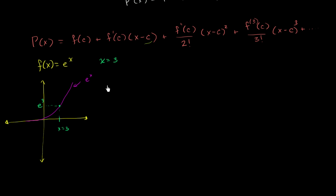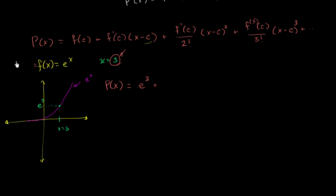The Taylor series expansion for f of x equals e to the x will be a polynomial. What's f of c? Well, if we're expanding around x equals 3, c is 3. So f of 3 is e to the third power. Then, what's f prime of c? f prime of x is also e to the x — you take the derivative of e to the x and you get e to the x. That's one of the super cool things about e to the x. In fact, the nth derivative of e to the x is still e to the x.